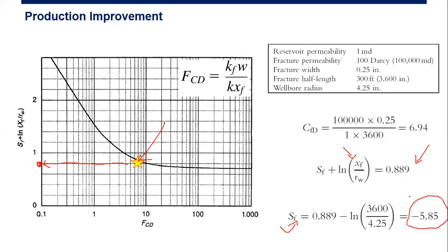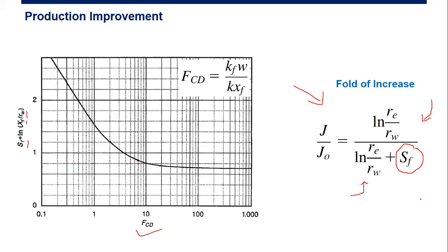And that's what we have here. So by fracturing we can get minus 5.85 due to the fracturing. It will increase the productivity index, and you can calculate the fold of increase by looking at this formula.